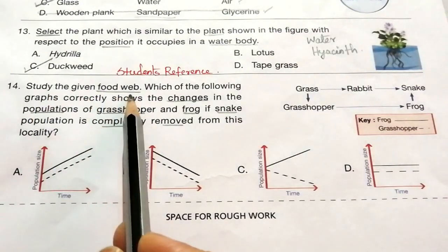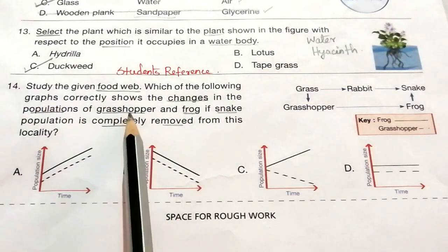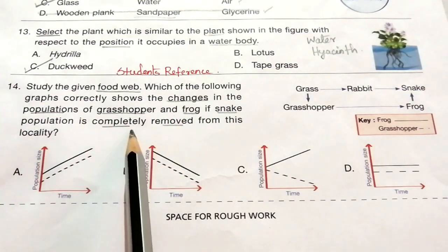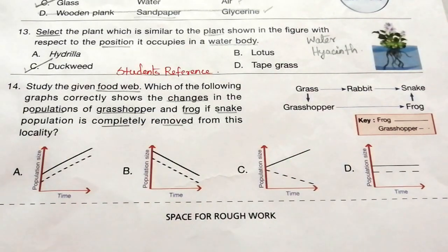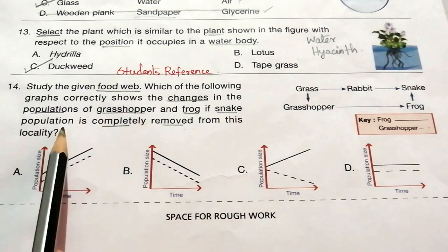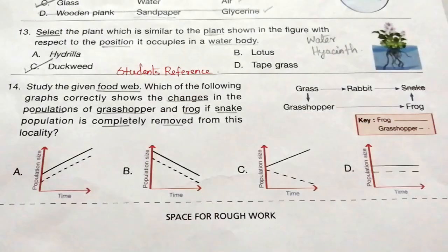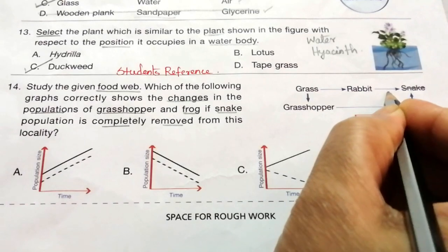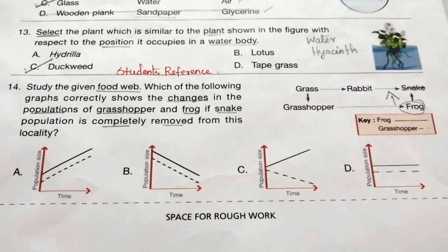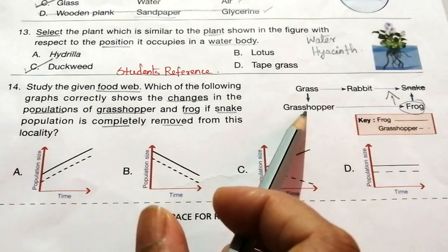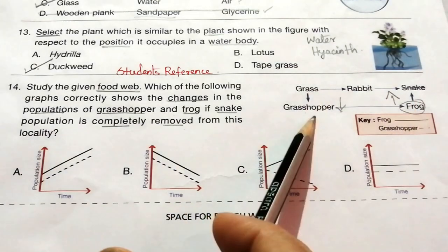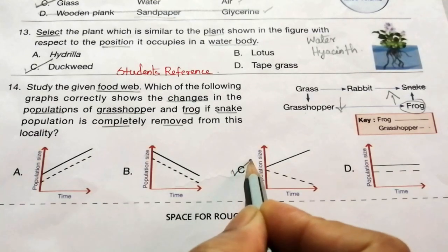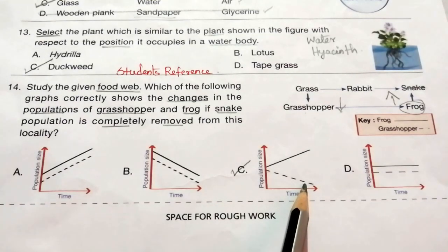Question 14: Study the given food web. Which of the following graphs correctly shows the changes in the population of grasshopper and frog if snake population is completely removed from this locality? If we remove snakes, the population of frogs starts to increase because frog is the food of snake. If the number of frogs increases, the number of grasshoppers starts to decrease because frogs eat grasshoppers. Our answer is C — the solid line is frog increasing and the dotted line is grasshopper decreasing.